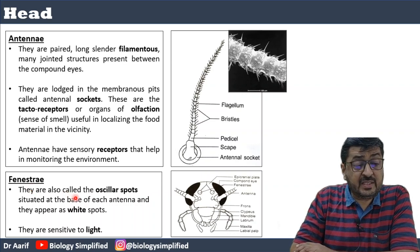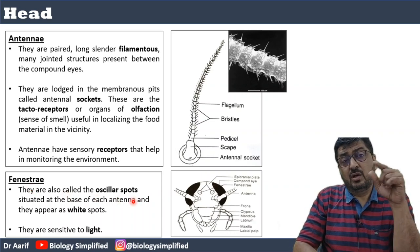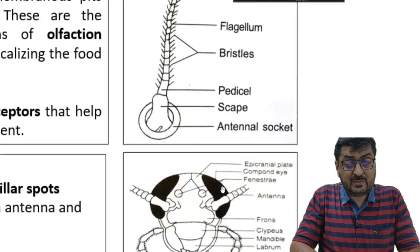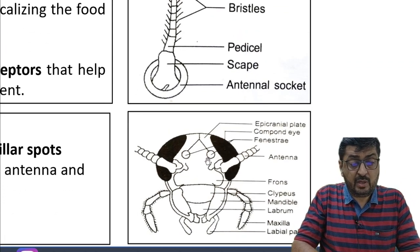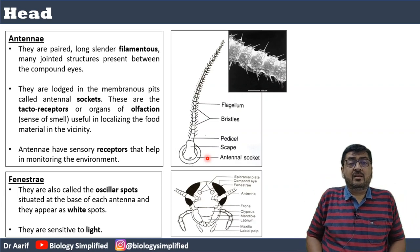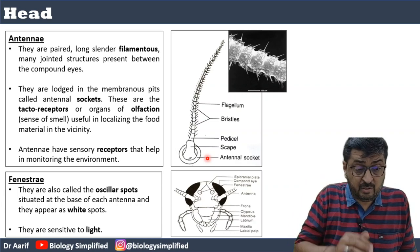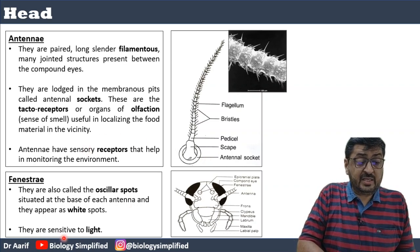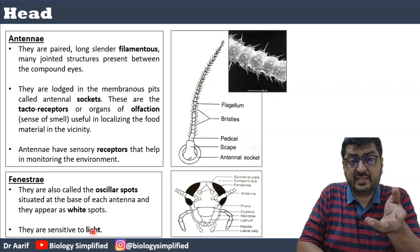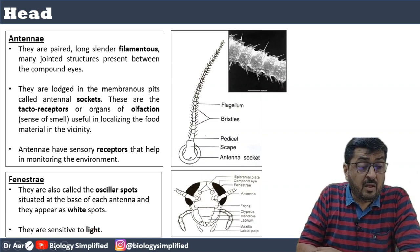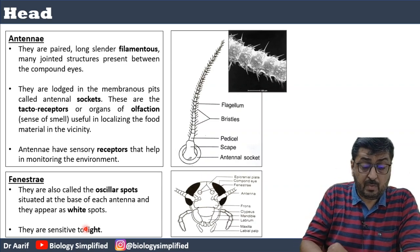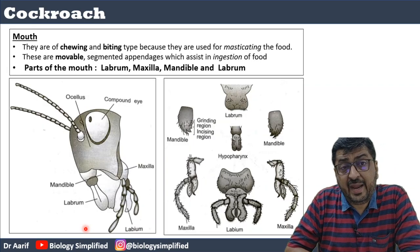The third part of the head is the fenestrae, which are called ocellular spots. Looking at the head diagram you can see two white spots — those are the two fenestrae. Fenestrae have a different meaning here from their use in the kidney context. They are considered sensitive to light, though some books differ on this. We will go with what is given in the state board book and NCERT.